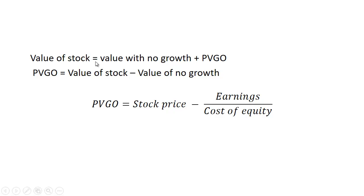The value of the stock equals the value with no growth plus the value of the growth opportunity. So if we just rearrange the terms, we take the stock price minus the earnings over the cost of equity, which is the value with no growth, and the rest is the present value of the growth opportunity.